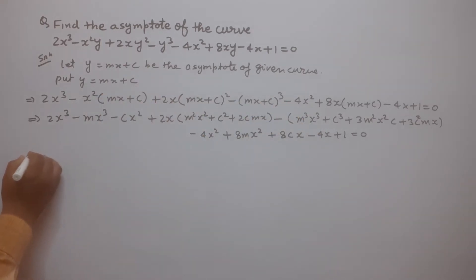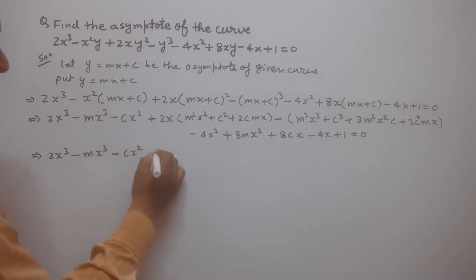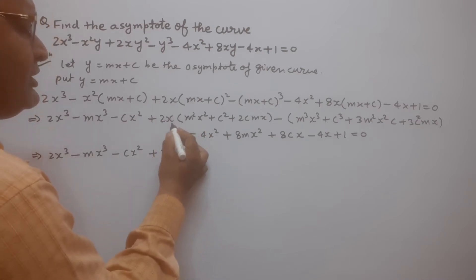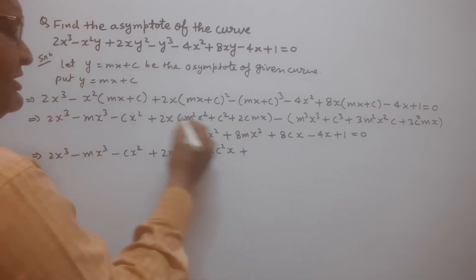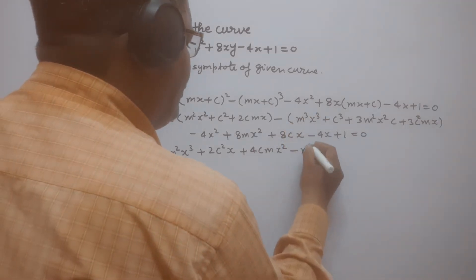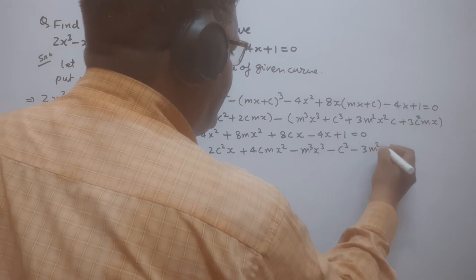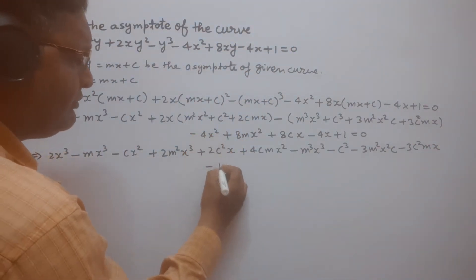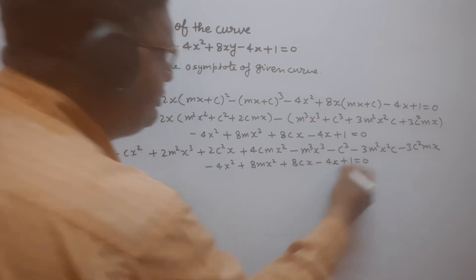Now we solve and collect terms. The x³ terms give: 2x³ - mx³ + 2m²x³ - m³x³. The x² terms give: -cx² + 4cmx² - 3cm²x² - 4x² + 8mx². The x terms give: 2c²x - 3c²mx + 8cx - 4x. And the constant term is: -c³ + 1 = 0.